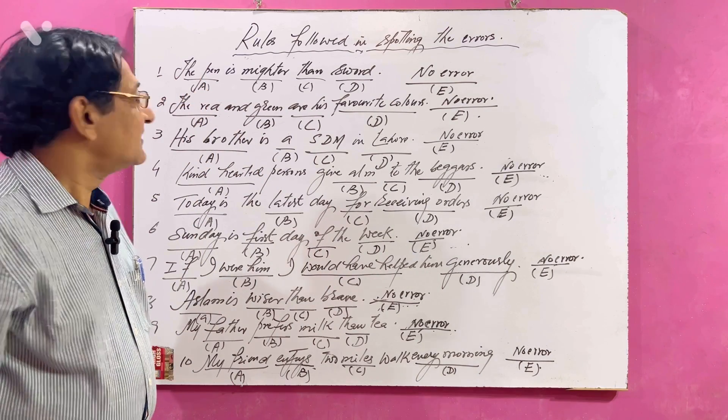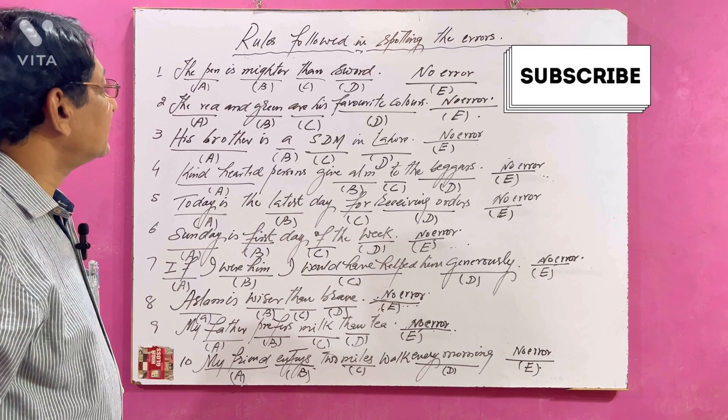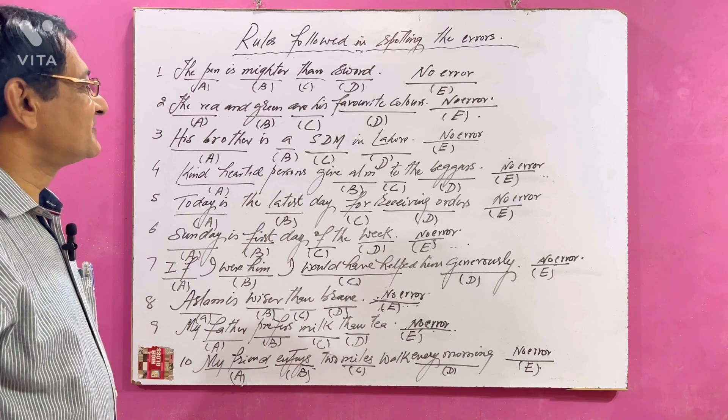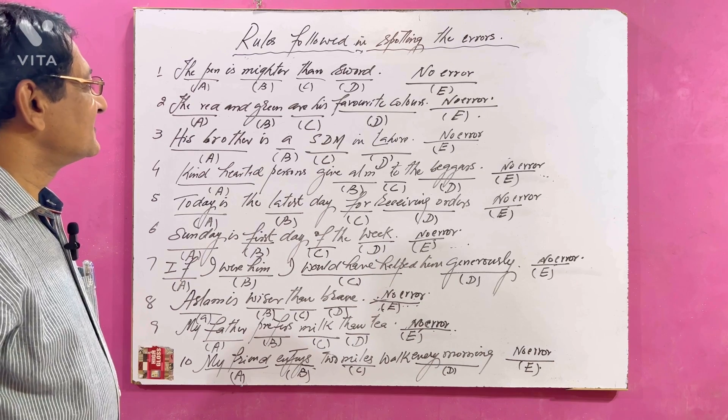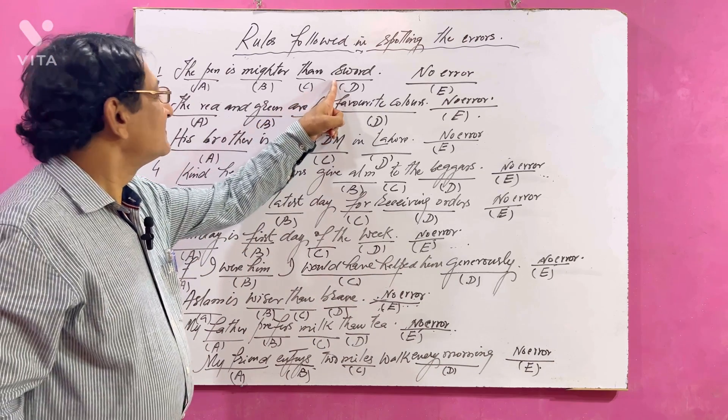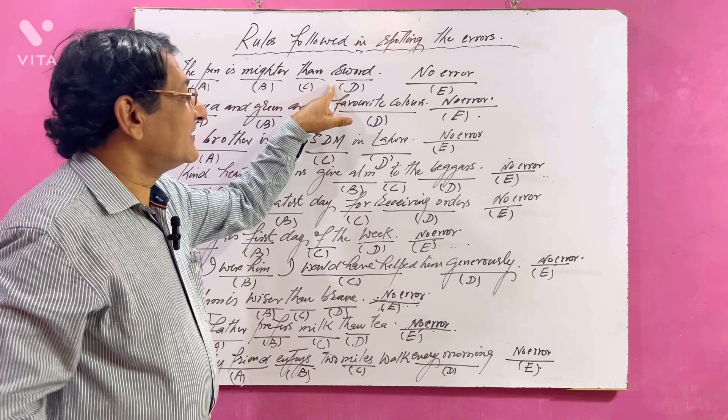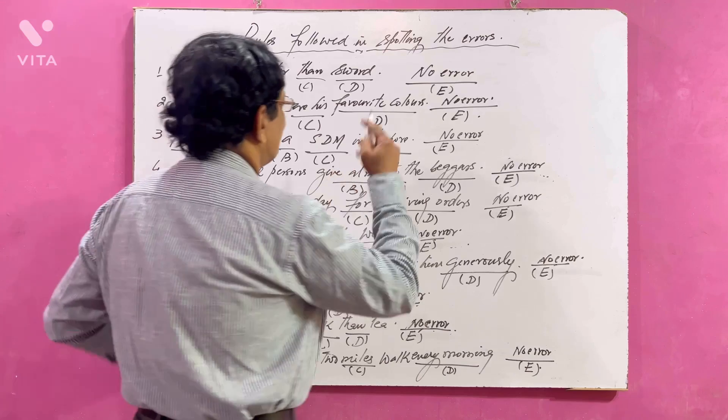Number one sentence: The pen is mightier than sword. Here is the error - here, yes, this one D. Here we have got article 'the' and we have to put the same article here, means 'the sword'.